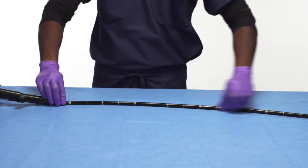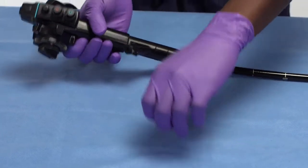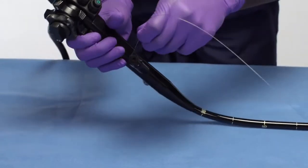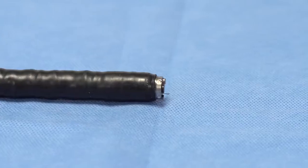Be sure to straighten the endoscope. Feed the tripwire through the biopsy valve and then through the working channel of the endoscope until the wire loop exits the distal end of the endoscope.